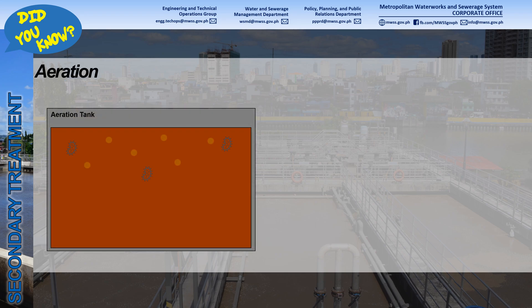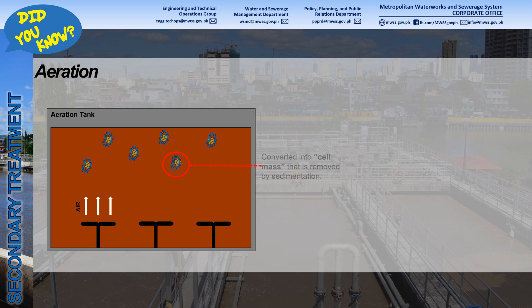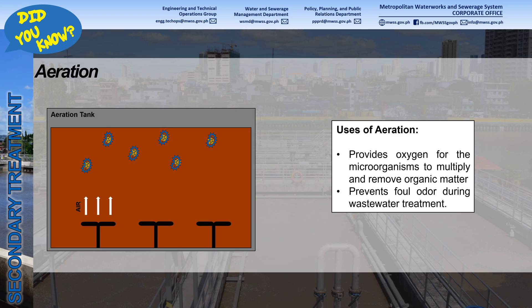After primary sedimentation, the wastewater still contains particles and organic matter, and these are consumed and decomposed by microorganisms. To help increase the number of microorganisms in the wastewater, air is supplied through blowers or diffusers. When the organic matter is consumed and decomposed by microorganisms, it is converted to a cell mass that can be removed by sedimentation. Aeration is used to provide oxygen for the microorganisms to multiply and remove the organic matter. In addition, it also prevents the emission of foul odor during treatment.